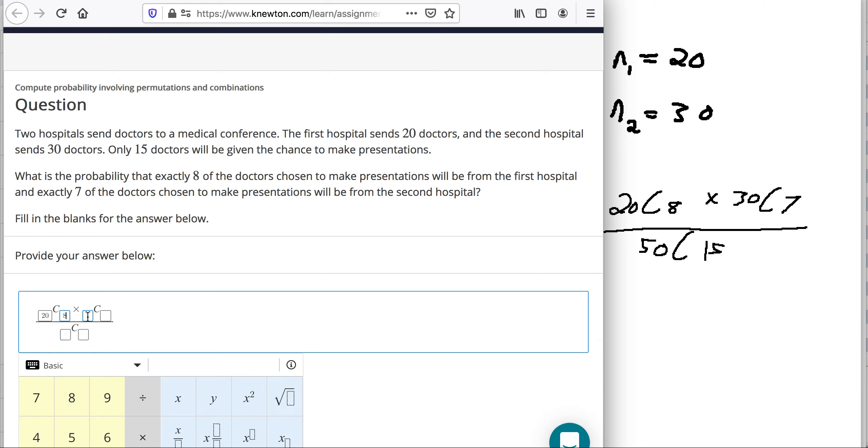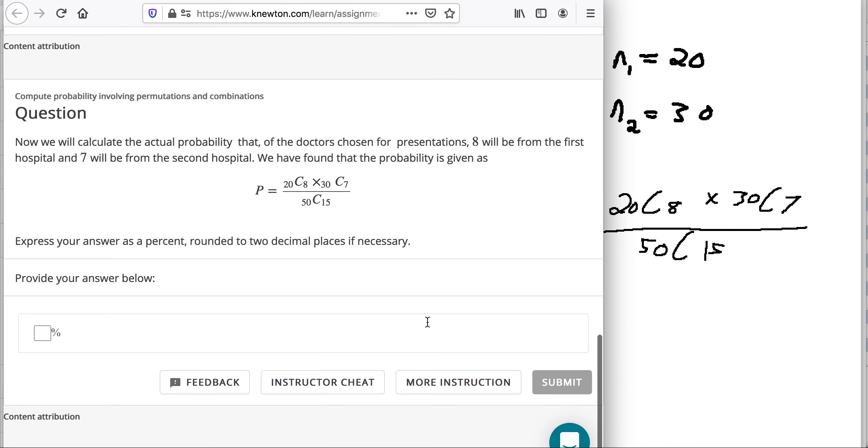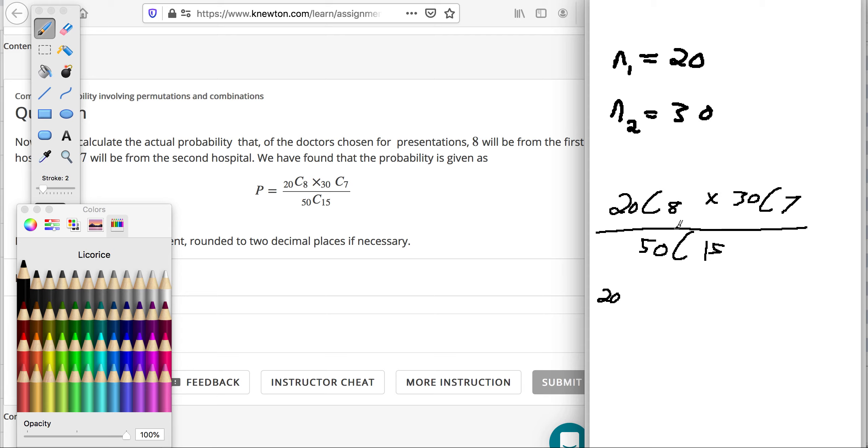So there's 20 choose eight. There's 30 choose seven. And then we got 50 choose 15. All right, let's see what else we can work on here. So now we have to express the answer as a percent. It's going to take a little bit of math to do. So with this 20 choose eight business, that's 20 factorial over 8 factorial, 20 minus 8 factorial. Some of this is going to be too big for a computer. So I just rewrote this. This is 30 factorial over 7 factorial, and it's 30 minus 7 factorial. And then it's all divided by, man, this is brutal, 15 factorial, and then 15 minus 15. If you're not sure where I'm getting this from, you just look up the combination formula.